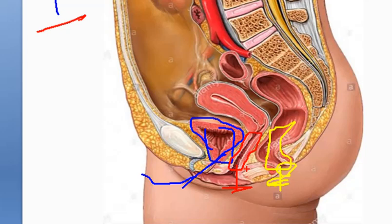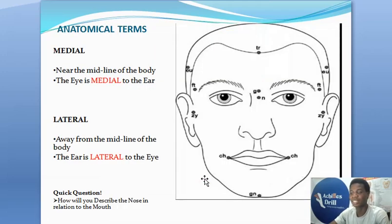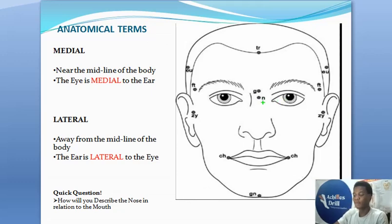These terms and relation are very simple — you just have to get it right. So far we've talked about superior and inferior, and now we've demystified anterior and posterior. Let's move on to another important term: medial and lateral.